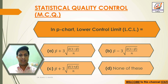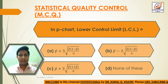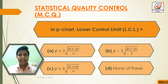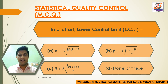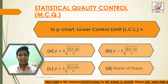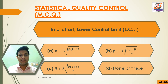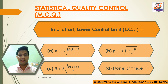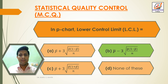Question 18: In NP chart, the lower control limit (LCL) is equal to P-bar minus 3 × √(P-bar × (1 − P-bar) / n). Answer: Option B — LCL = P-bar − 3 × √(P-bar × (1 − P-bar) / n). That is the lower control limit in the NP chart.